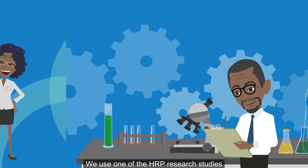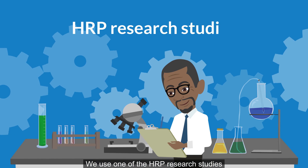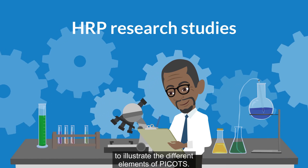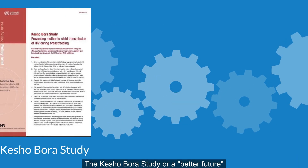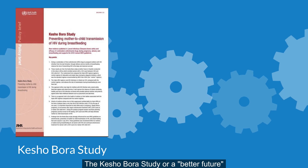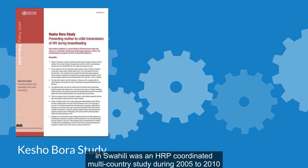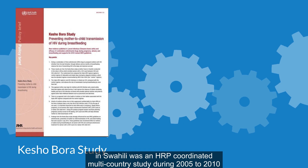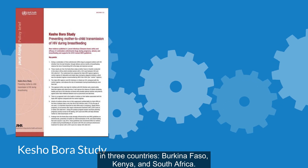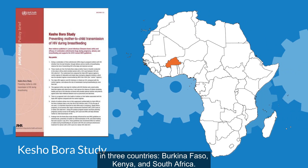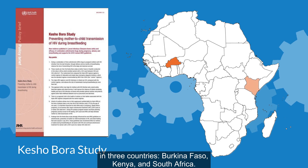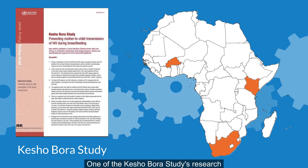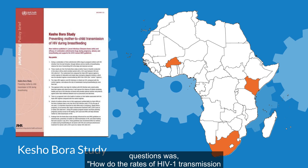We use one of the HRP research studies to illustrate the different elements of PICOS. The Keshobora study, or 'A Better Future' in Swahili, was an HRP-coordinated multi-country study during 2005–2010 in three countries: Burkina Faso, Kenya, and South Africa. One of the Keshobora study research questions was...